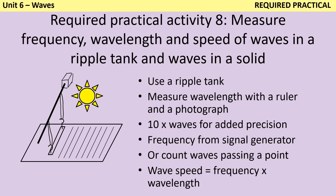Once you have wavelength and frequency you can put them together to work out wave speed. Alternatively, if frequency is what you need to calculate, you would measure the time for one wave to travel the length of the tank using a stop clock and then use velocity equals distance divided by time — the length of the tank divided by the time it took.